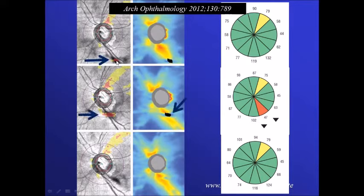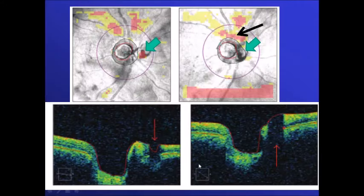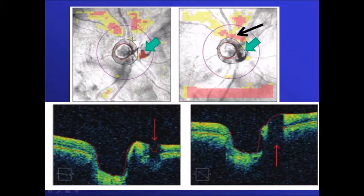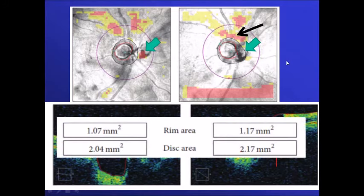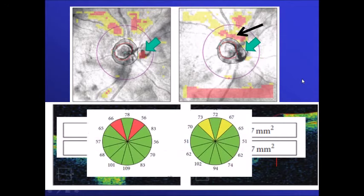With a vitreous opacity that moved over the ring on repeat imaging, a low signal artifact appeared compared to the original scan. In another example, an opacity was included within the area used to measure disc size, causing the machine to calculate a larger-than-normal disc. This changed the disc limits, rim area measurement, and ring location, producing different sector measurements between the two readings.